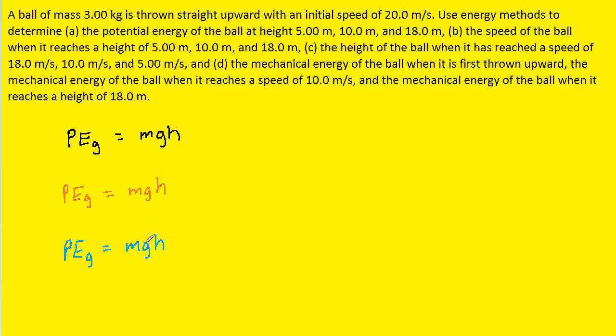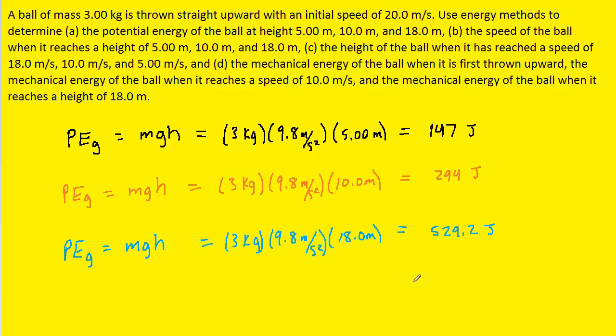The value of g will be 9.8 for each, and the mass is given as 3 kilograms. After plugging in those three heights and computing these gravitational potential energies, you should obtain the following answers for part A. Notice the unit is in joules.